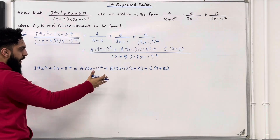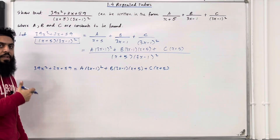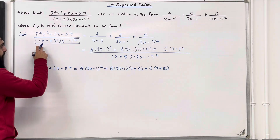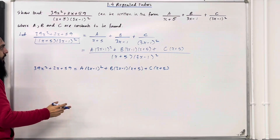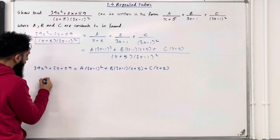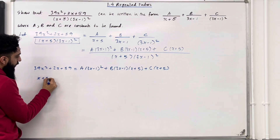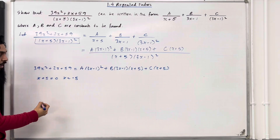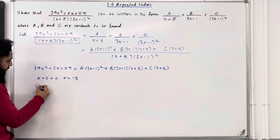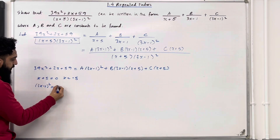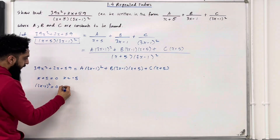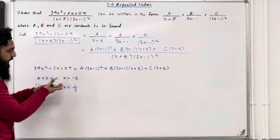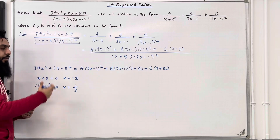We're going to use this equation to work out A, B and C. The next step is to set each bracket equal to zero. Setting (x + 5) = 0 gives x = −5. Setting (3x − 1)² = 0 gives x = 1/3. We'll use these x-values to calculate the missing constants.